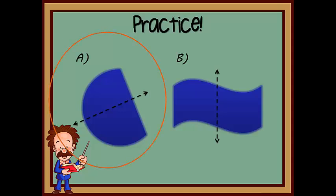If you chose A, you're correct. When shape B is folded in half, its two halves do not line up. Therefore, it is not symmetrical. Shape A, since it can be folded into two matching halves, is symmetrical.